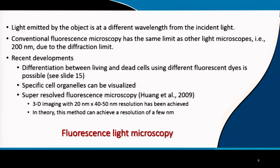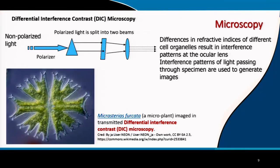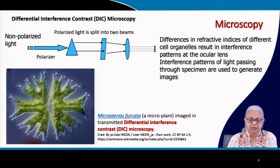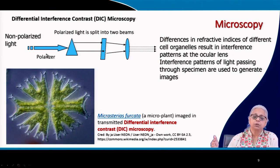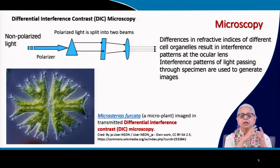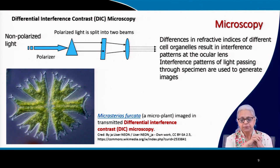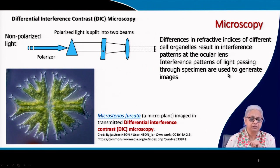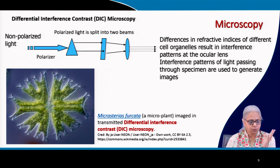That is about fluorescence light microscopy. The next method is called differential interference contrast microscopy, or DIC. In this case, non-polarized light is passed through a polarizer, which splits the light into two beams. These are passed through two prisms and what reaches the ocular lens — because of interference patterns generated by differences in refractive indices of different cell organelles — creates a particular image. Here is one outcome: a micro plant cell.